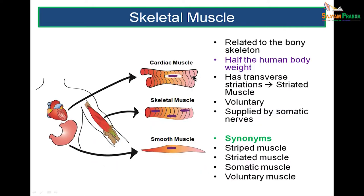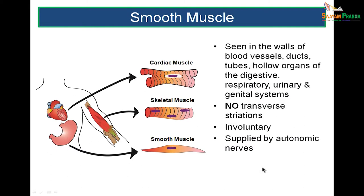Coming to skeletal muscle: it is striated muscle, having striations across its length. It is multinucleated and forms half of the body weight. It is supplied by the somatic nervous system. It is also called striped muscle, striated muscle, somatic muscle, or voluntary muscle.